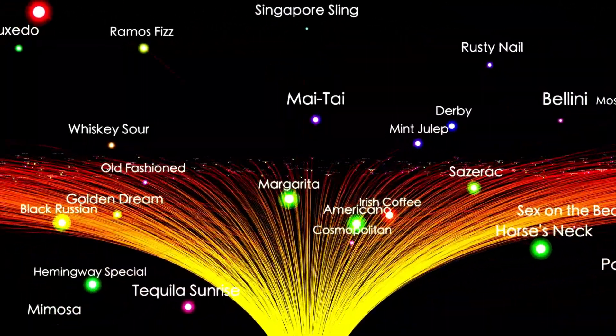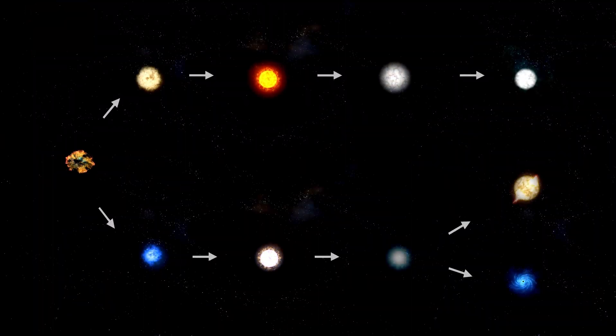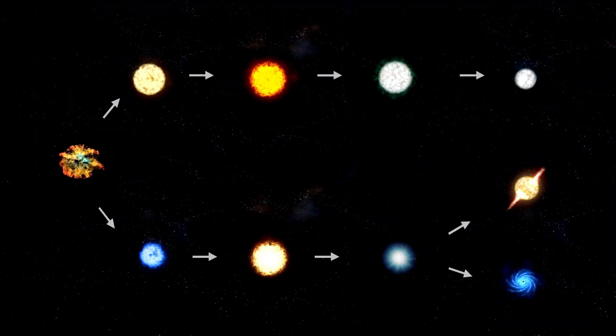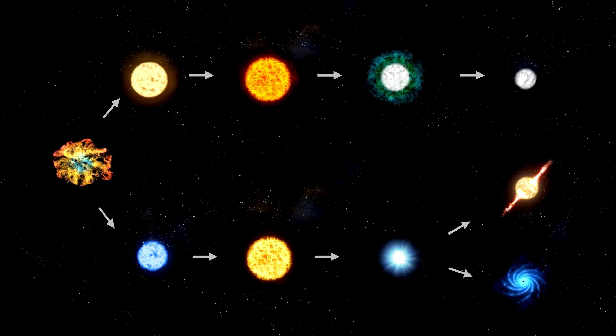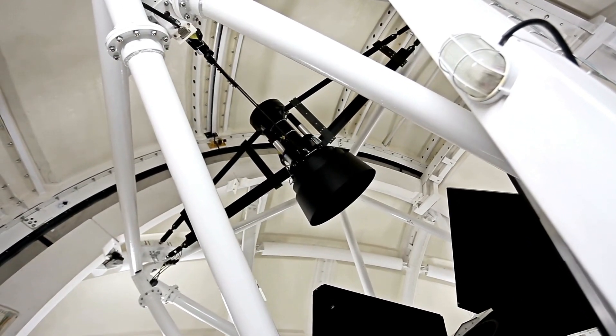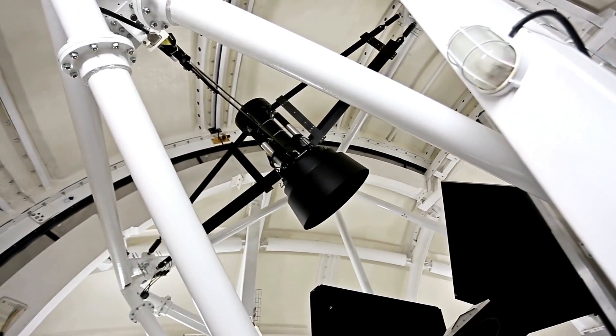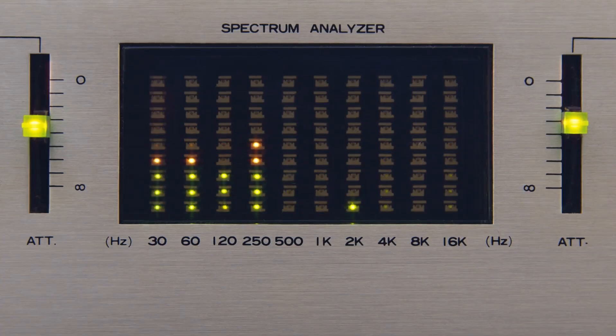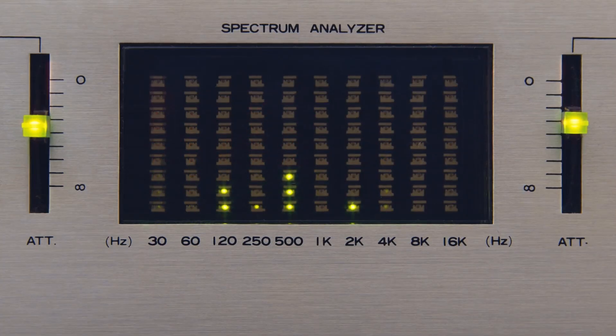To study these phenomena, scientists use advanced tools like photometry and spectroscopy. Photometry measures variations in the star's light over time, offering insights into its pulsations, while spectroscopy analyzes the light at different wavelengths, revealing details about its temperature and motion. Together, these methods create a comprehensive picture of Betelgeuse's behavior, shedding light on the processes driving its changes.